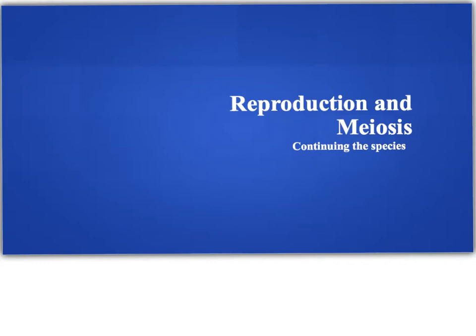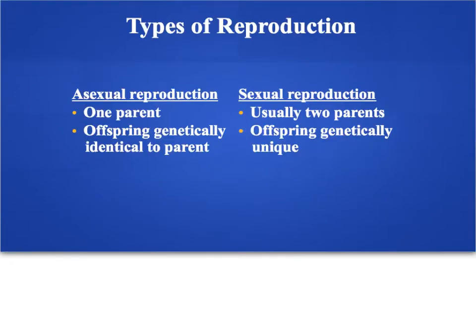Hello, biology students, and welcome to the second half of our cellular reproduction unit, which is going to be all about meiosis. As you remember from earlier in the year, there are two types of reproduction that we see in organisms. So the first type is asexual reproduction, where we have one parent producing identical offspring.